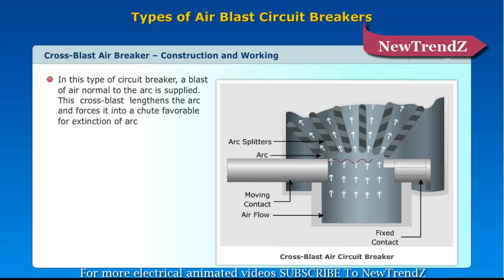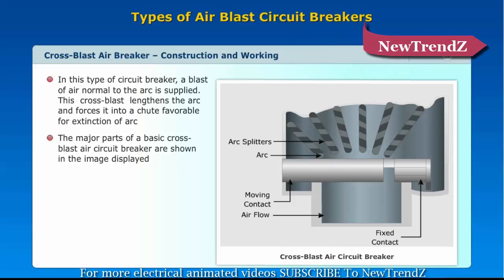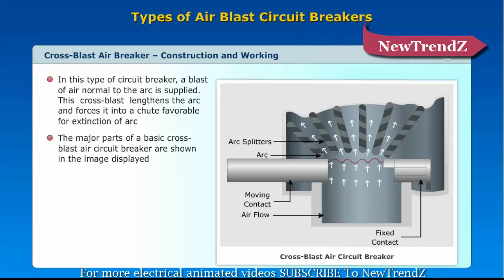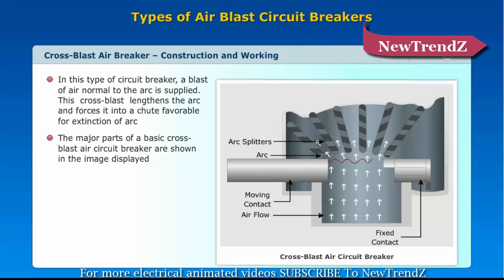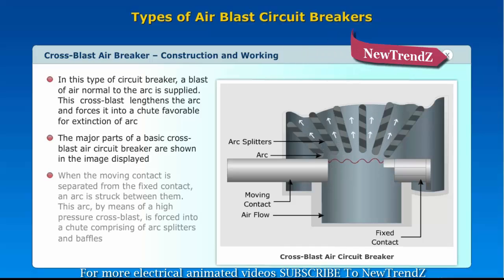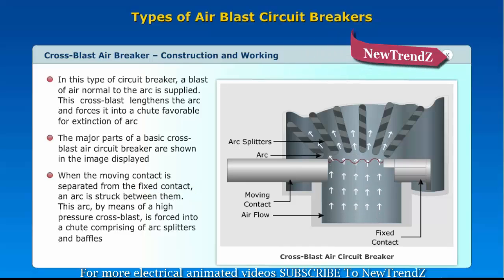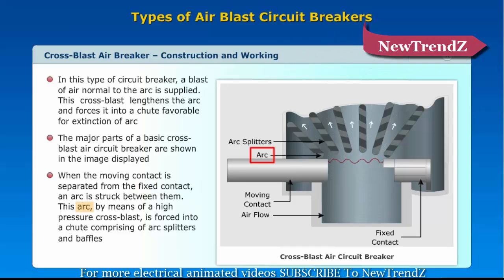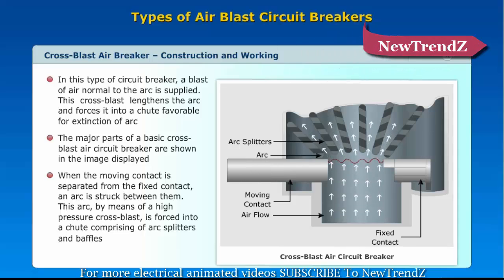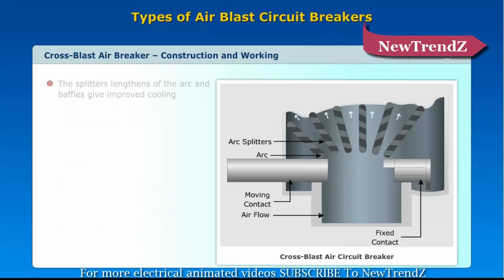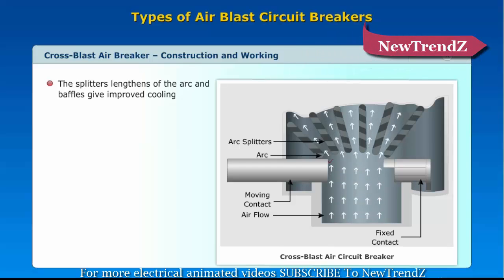In a cross blast circuit breaker, a blast of air normal to the arc is supplied. This cross blast lengthens the arc and forces it into a tube favorable for arc extinction. When the moving contact separates from the fixed contact, an arc is struck between them. This arc, by means of a high pressure cross blast, is forced into a chute comprising arc splitters and baffles.